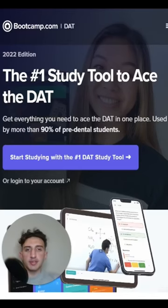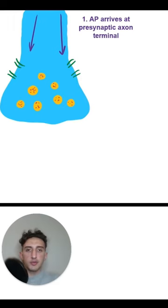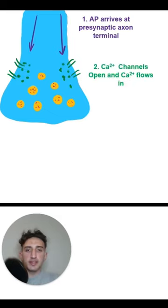How does an action potential become a signal? Ryan from Bootcamp here, and let's talk about the details of synaptic transmission that you absolutely need to know to ace your DAT. So when we're trying to make an action potential into a signal, the first thing that needs to happen is our action potential needs to arrive at the presynaptic axon terminal.